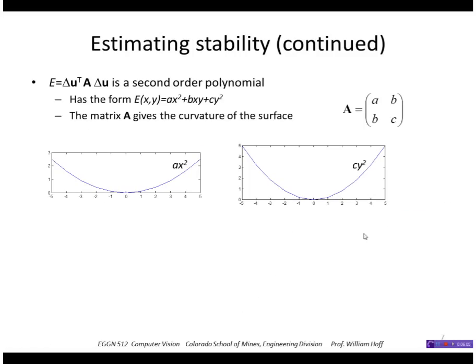If you think about it, the matrix A, that product forms a second order polynomial: ax squared plus bxy plus cy squared. If I just looked at the slice, the projection in x, ax squared is a polynomial, and the larger the value of a, the steeper that curve is, and the more pronounced my minimum is. Similarly, in the y direction. So if both a and c are large, we have a good minimum in our surface.